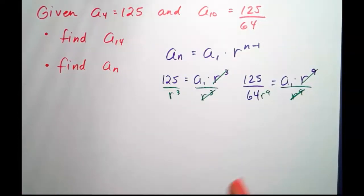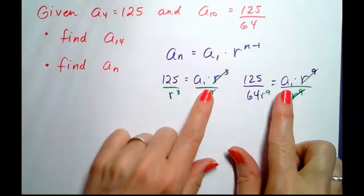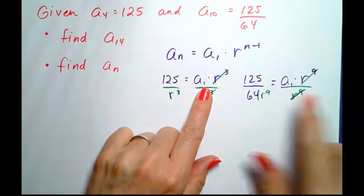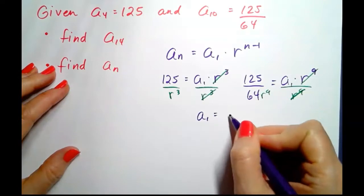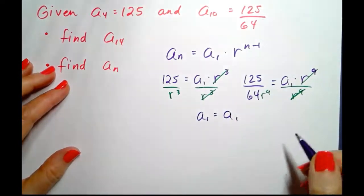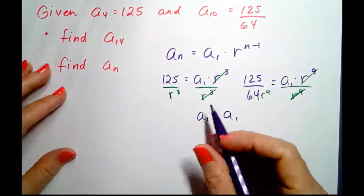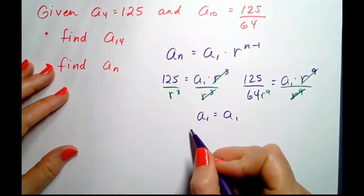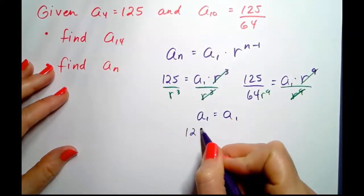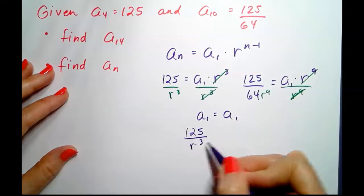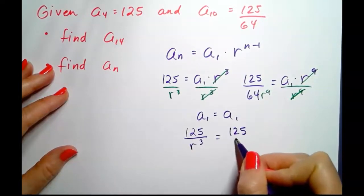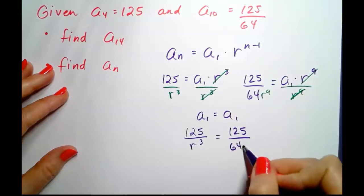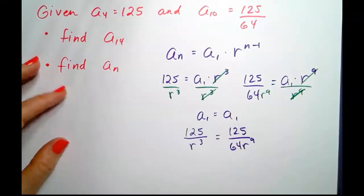Now we've got both equations solved for a sub 1. So if we do substitution here, a sub 1 is clearly equal to itself, therefore by reflexive property and substitution, 125 over r cubed equals 125 over 64 r to the ninth. This becomes an equation to solve.